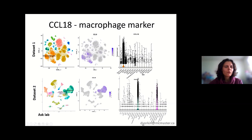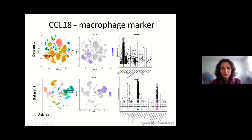This plot is called a feature plot. It shows us the level of expression of the gene of interest — high expression is in purple and blue, and low expression is in gray. We have a cluster here being highlighted, and it's the macrophages, which is very reasonable for CCL18. For the second dataset we have the large macrophage population and a small proliferating macrophage population. In the first dataset that population was too small to identify.